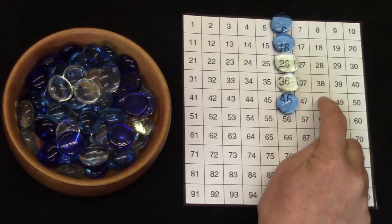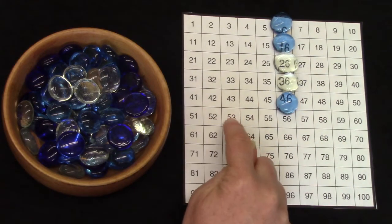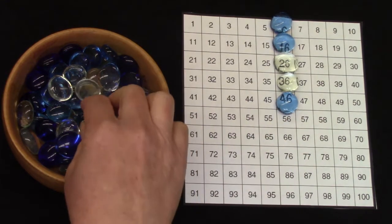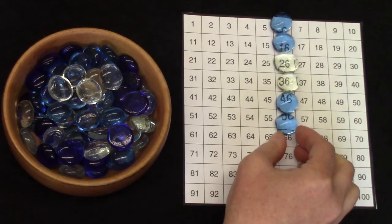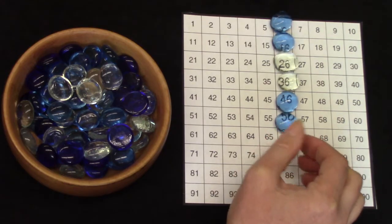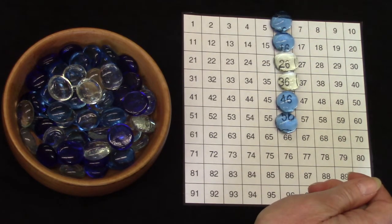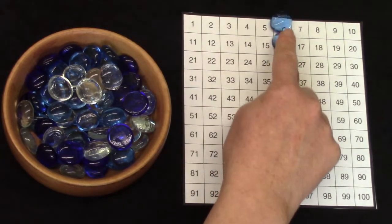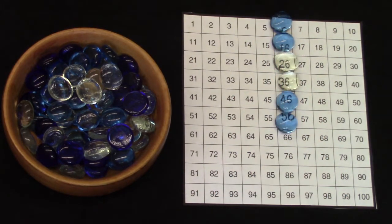Count with me: 1, 2, 3, 4, 5, 6, 7, 8, 9, 10. 46 plus 10 is 56. Hmm. Are you seeing a pattern? I know that you are. All of our gems are in one line.